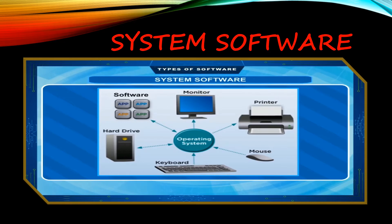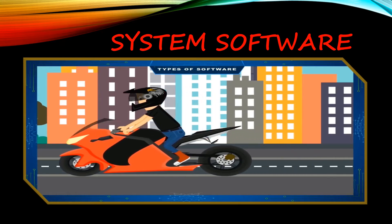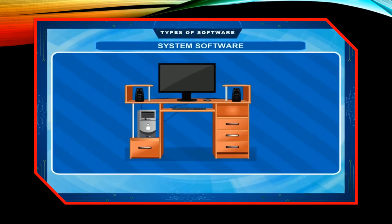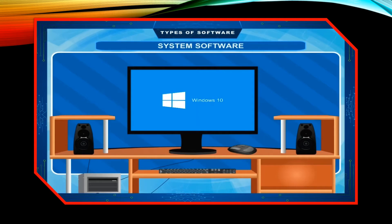Let us understand the working of an operating system with the help of a motorbike. You have a bike with petrol, but it does not run by itself until you ride it. So you are the operator, or the operating system, of your bike. In the same way, a computer without an operating system is just like a showpiece. The operating system drives the computer and makes it work.